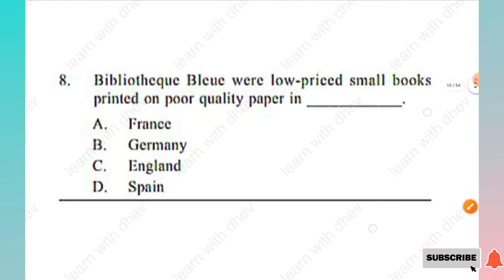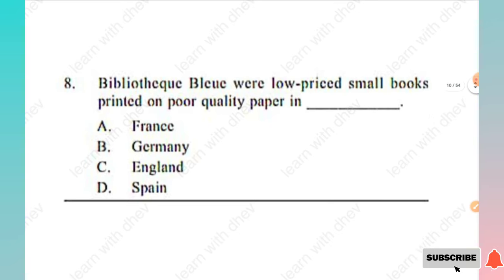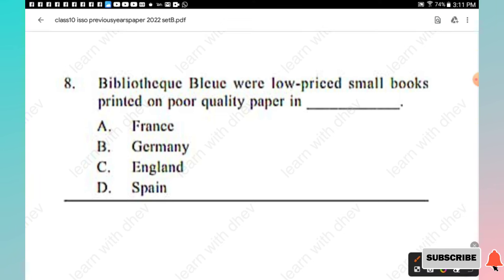Question 8: Bibliotheque Bleue were low-priced small books printed on poor quality paper in — options: France, Germany, England, Spain. The answer is Option A, France.